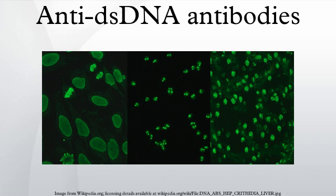Anti-dsDNA antibodies are a group of anti-nuclear antibodies whose target antigen is double-stranded DNA. Blood tests such as enzyme-linked immunosorbent assay and immunofluorescence are routinely performed to detect anti-dsDNA antibodies in diagnostic laboratories. They are highly diagnostic of systemic lupus erythematosus and are implicated in the pathogenesis of lupus nephritis.